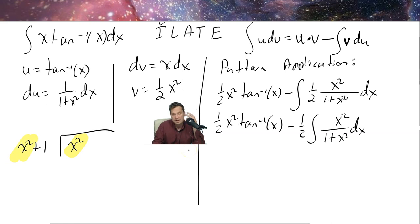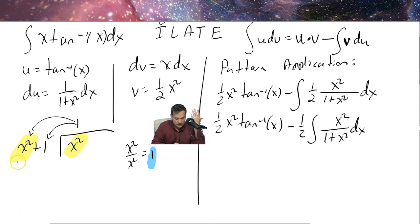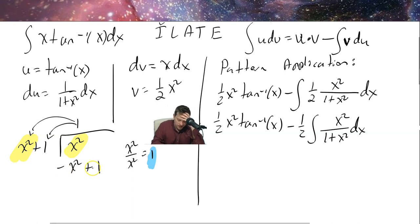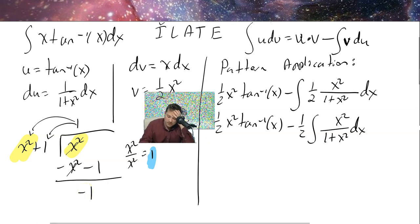Taking the leading term x² divided by x² gives 1 on top. Multiply 1 by (x² + 1) to get x² + 1, then subtract — changing signs gives −x² − 1. The x² terms cancel, leaving a remainder of −1. So x² / (1 + x²) = 1 − 1/(x² + 1).